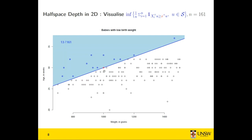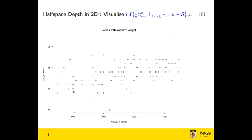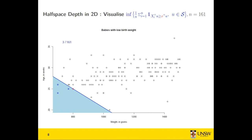If I consider another point on the outside of the cloud and do the same operation, the new depth is 3/161. The depth is small if the point is on the outside of the cloud, because I can find a closed half-space containing very few points. If the depth value is very small, the point is on the exterior of the cloud — it's some sort of outlier.